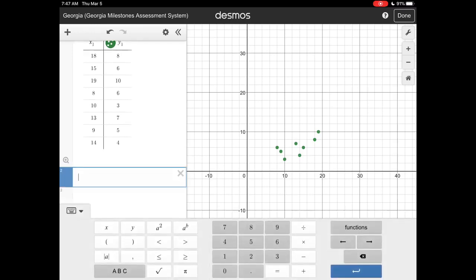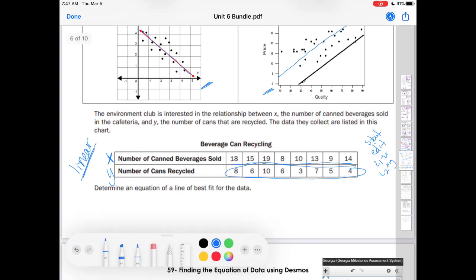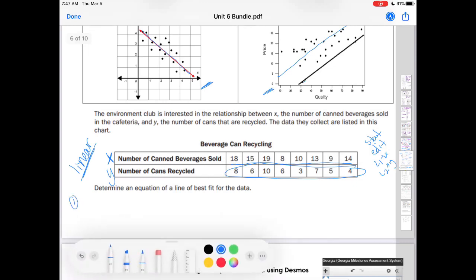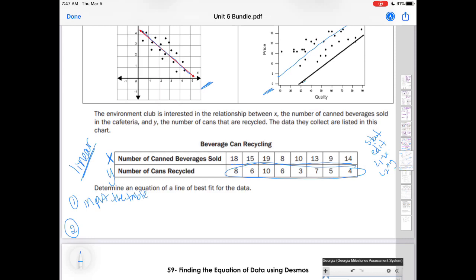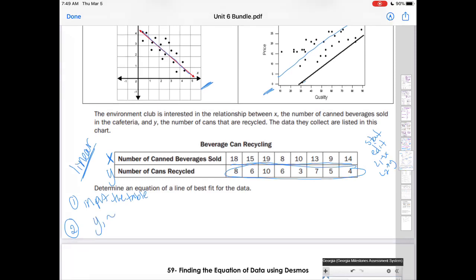Here comes the tricky part and we're going to write this down in our notes what we are going to type. The first thing we have to do is input the table and the second thing you're going to type is Y1 and then we're going to use this little curvy thing ~ mX1 plus B. We can't use equals because it will mess us all up.